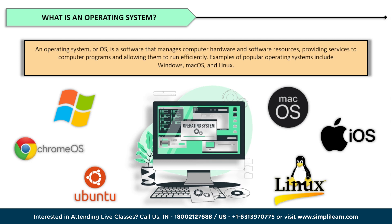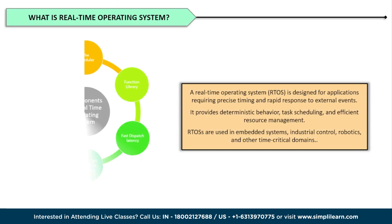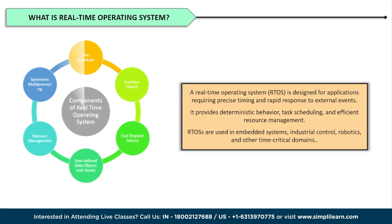What sets real-time operating systems apart from regular operating systems? The key distinction lies in the ability to respond to events in a deterministic and timely manner. In a real-time system, meeting deadlines is of utmost importance — it must be able to complete tasks within specific time constraints known as deadlines.